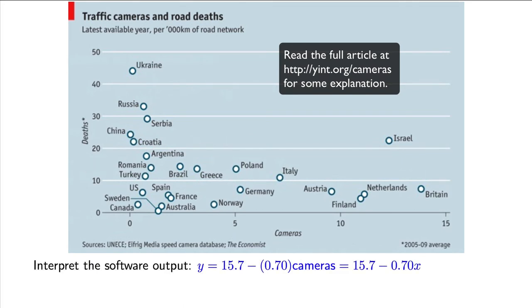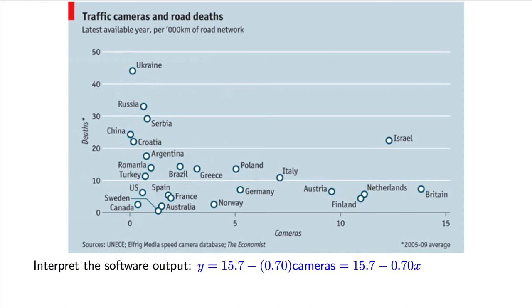Let's take a look at the regression model for this data. I've done the work here for you, and calculated the least squares model as the number of deaths, y, equal to 15.7 minus 0.7 times the number of cameras. At face value, that slope coefficient of 0.7 tells us that every single additional camera will serve to reduce road deaths by 0.7 per every 10,000 kilometers of road network. This is a number that would be important to someone working in public policy and road safety.